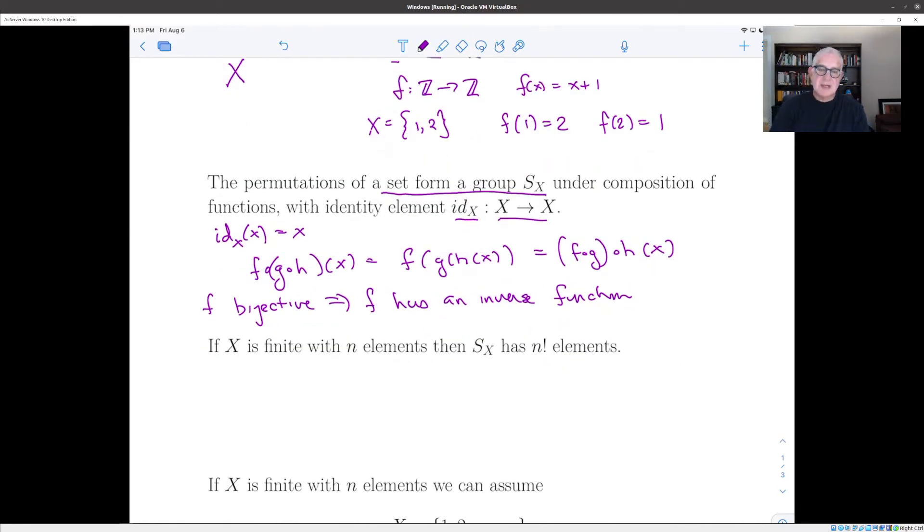And in the special case where X is a finite set with n elements, then the collection of bijections, there are n factorial bijections, because here we have our set X. It has elements x_1 down to x_n. And our function, we have to send x_1 to one of these elements. So we have n choices for x_1. x_2 can go to any other element except wherever we sent x_1. So we have n minus one choices for x_2. And when we get down to x_n, we've already decided where all the other elements are going,